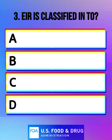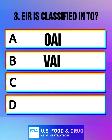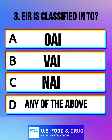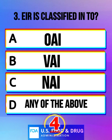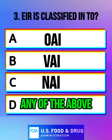EIR is classified into: Option A: OAI. Option B: VAI. Option C: NAI. Option D: any of the above. The correct answer is option D, any of the above.